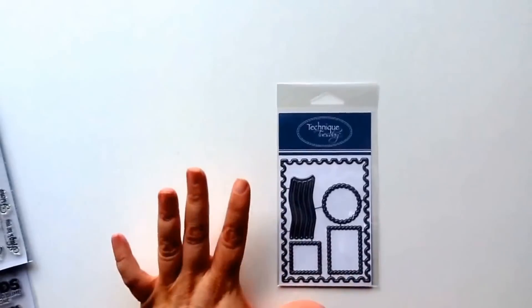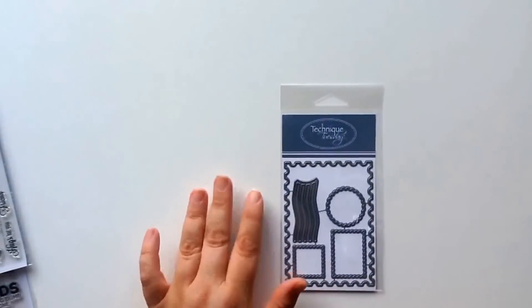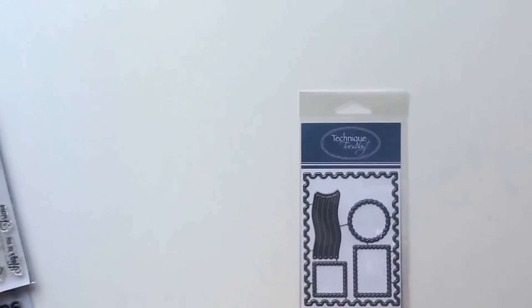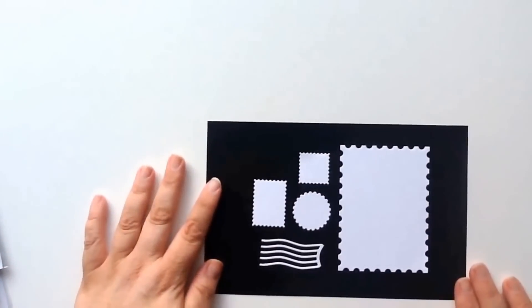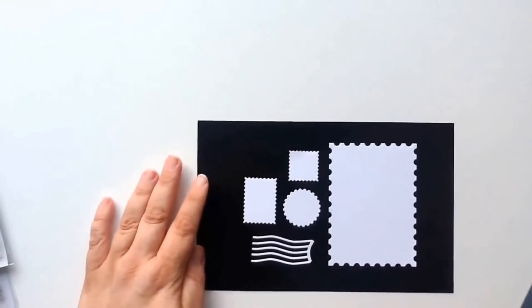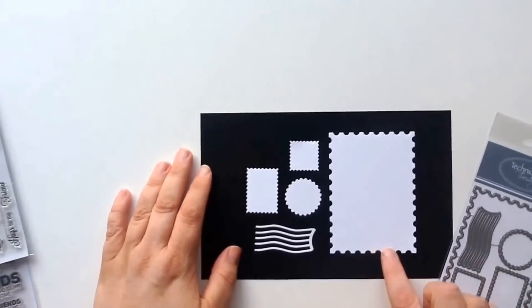Of course, one of the fringe benefits of doing these videos is I get to play, and so I brought home one and cut it up for you so you can see just what it looks like when it's cut. So here's that large postage card as well as the small postage marks and then that cancellation mark.